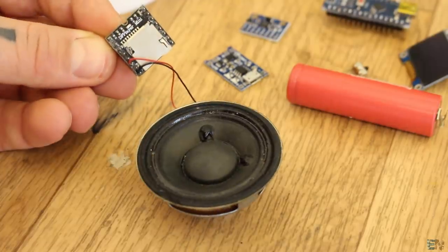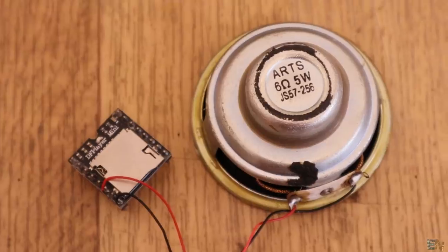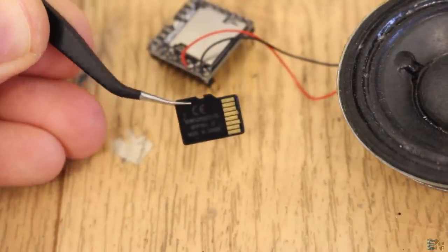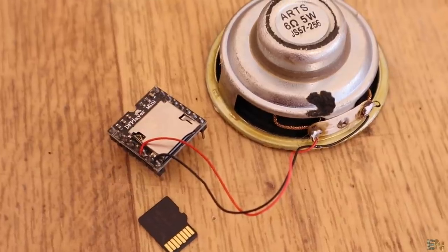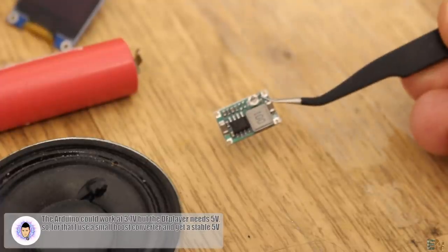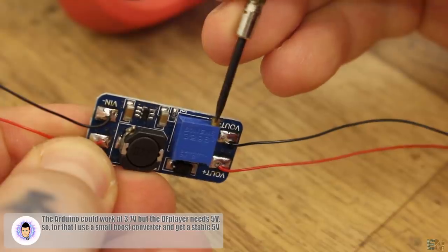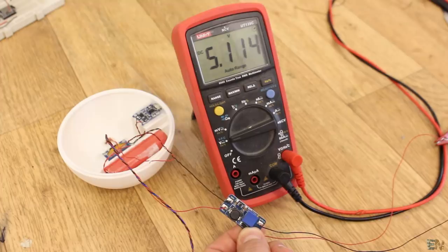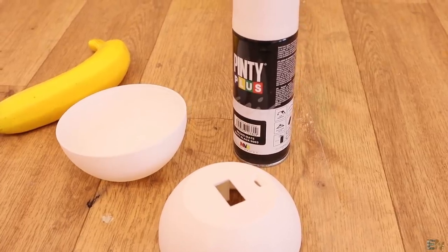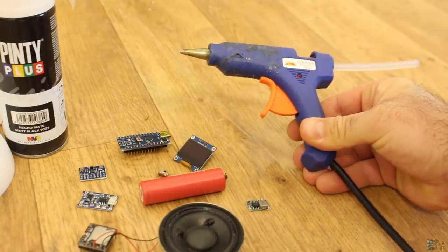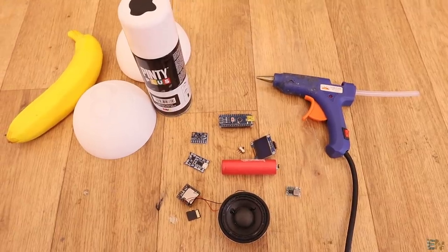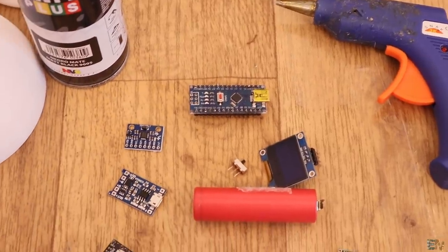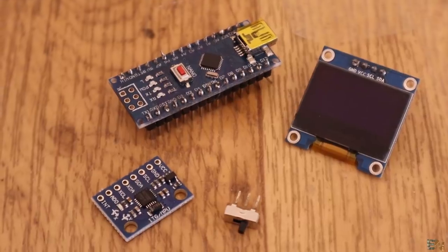As for the sound module, we need a DF player and a very small speaker of 6 ohms, and of course we also need a micro SD card to store the sounds on it. Because the DF player doesn't work with 3.7V directly from the lithium ion battery, we'll also need a small boost converter to get 5V. You'll also need some black spray paint and also some hot glue or any other type of glue. This is basically all we need for this project, and of course a soldering iron and some thin wires. See the full part list below on electronoobs.com.